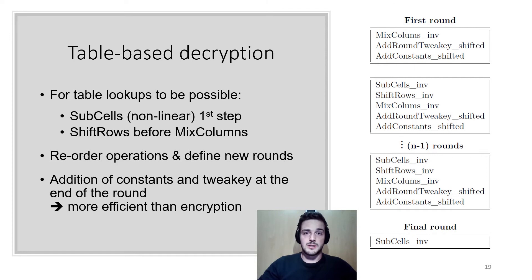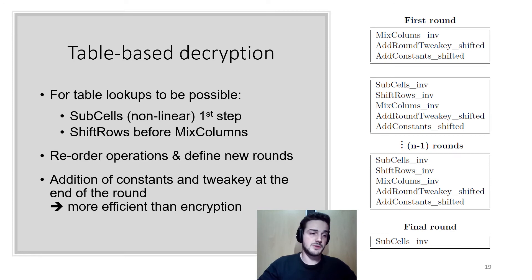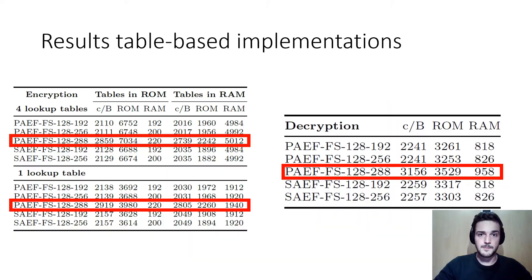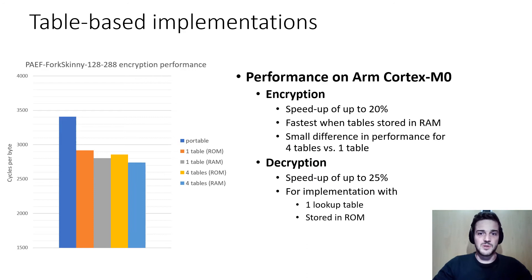For the table-based transformation to be possible, the non-linear step must come first and shift rows must come before mix columns. For decryption this caused a problem, so the order of operations was reordered and a new inverse round was defined. As a consequence, the first and final rounds are now different from the other rounds, but in this newly defined inverse round the additions of constants and keys are done at the end, enabling an efficient table-based implementation.